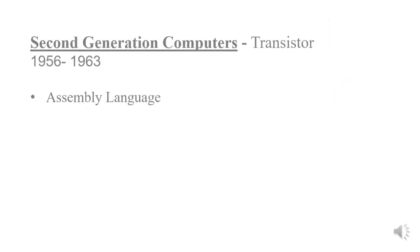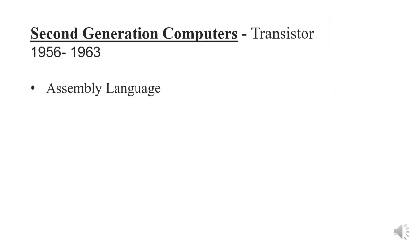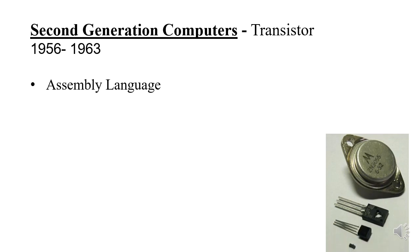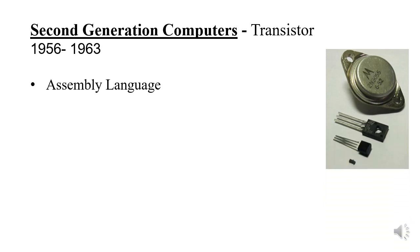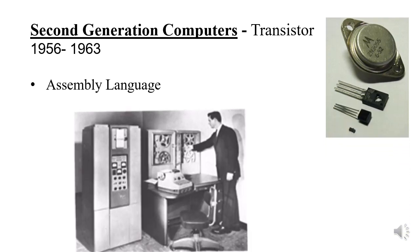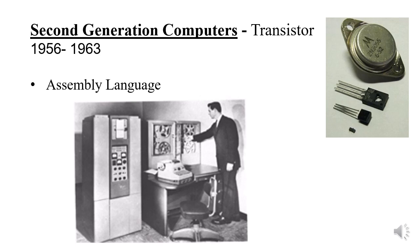The technology used in the second generation of computers is transistors, which were also used for secondary storage. Assembly language is used to enter commands, and assembler software is used to convert programs written in assembly language into machine language.